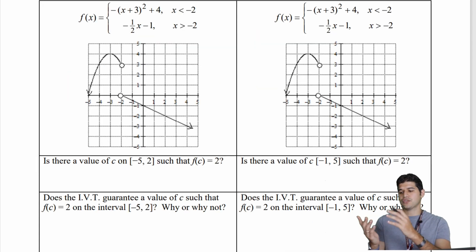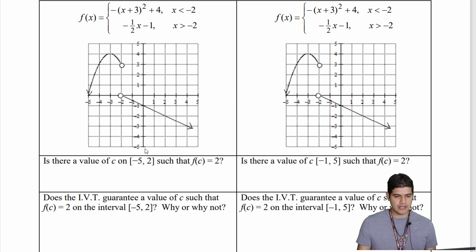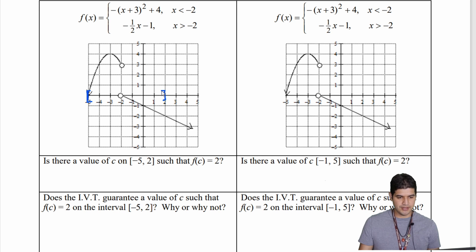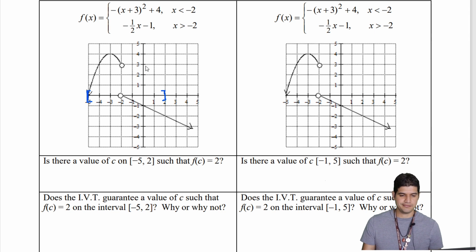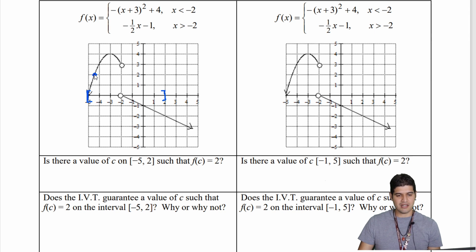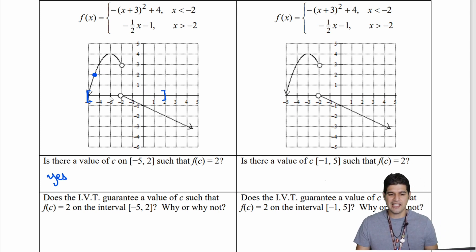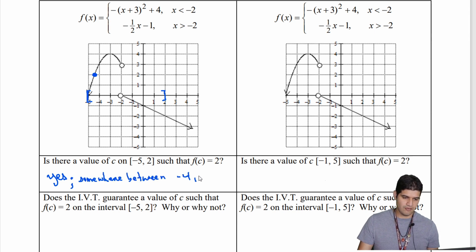Let's see this in action. Looking at the graph on the left, the question is: is there a value of c between negative 5 and 2 such that f of c equals 2? So is there a point between x equals negative 5 and x equals positive 2 where the function equals 2? Yes — right there it works, so c is somewhere between negative 4 and negative 5, probably around negative 4.5.